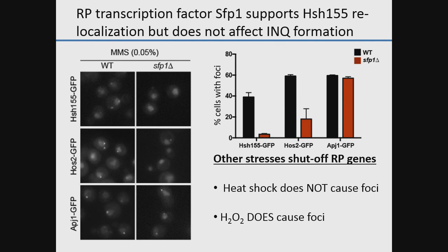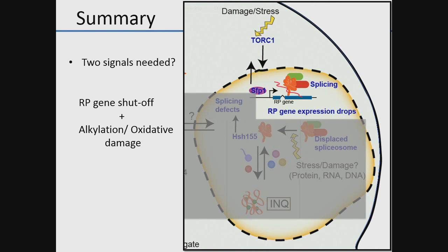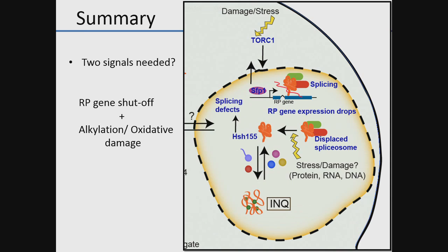It matters which way RP genes are shut off — heat shock doesn't cause foci but hydrogen peroxide does, although both stresses should shut off RP genes. We're building a model where RP gene expression drops in response to TOR signaling leading to SFP1 relocalization, but there's potentially a need for a second stress signal. We think spliceosomes are displaced under this stress — there's a 90% drop in the need for spliceosomes — but RP gene expression shutoff alone is not sufficient. Alkylative or oxidative damage to RNAs or proteins may further drive recruitment of HSH-155 to aggregate structures.